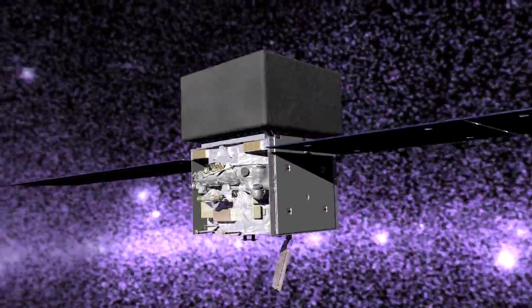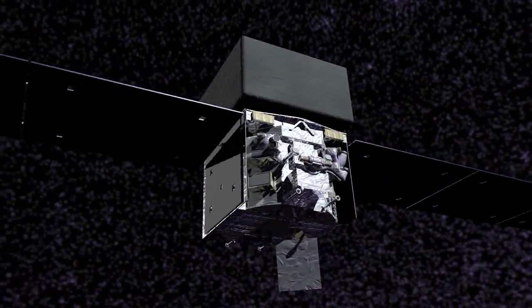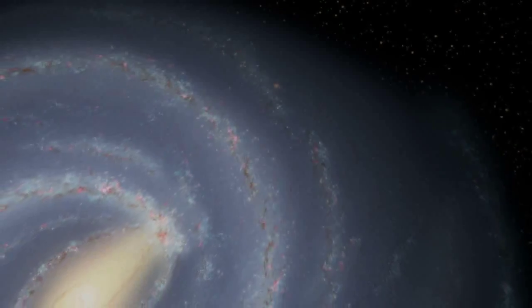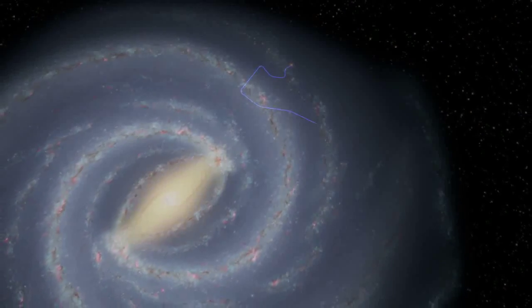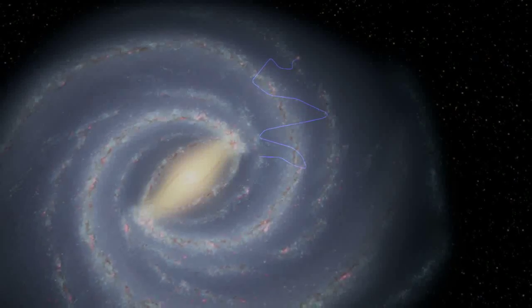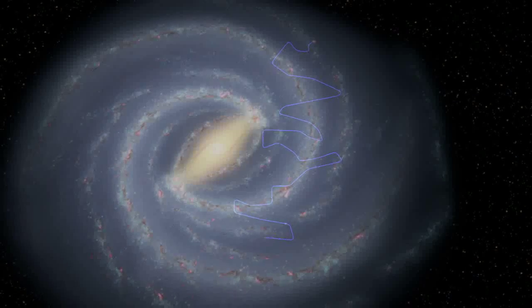Now, observations of two supernova remnants by NASA's Fermi Gamma-ray Space Telescope provide new insights. Because cosmic rays carry electric charge, their direction changes as they travel through magnetic fields. By the time the particles reach us, their paths are completely scrambled. We can't trace them back to their sources.